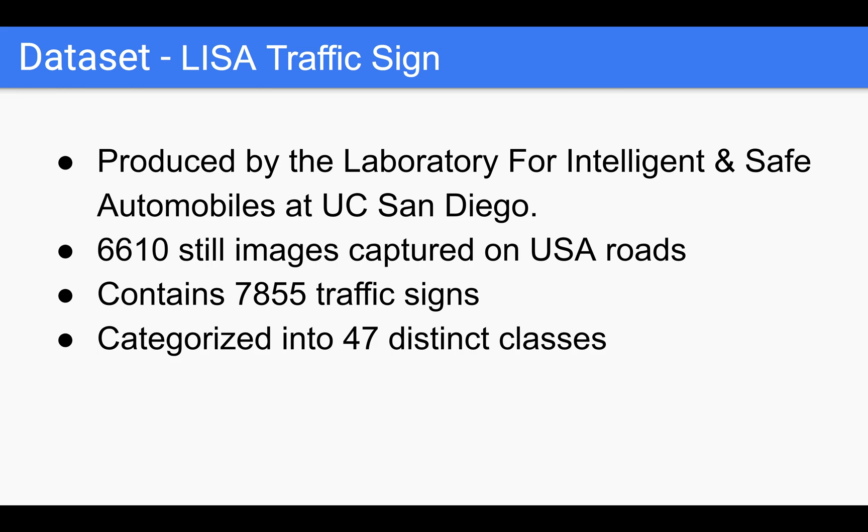The LISA traffic sign dataset is produced by the Laboratory for Intelligent and Safe Automobiles at the University of California at San Diego. This dataset is composed of 6,610 still images captured on USA roads, containing a total of 7,855 traffic signs that are categorized into 47 distinct classes.